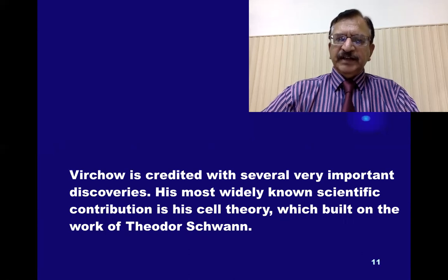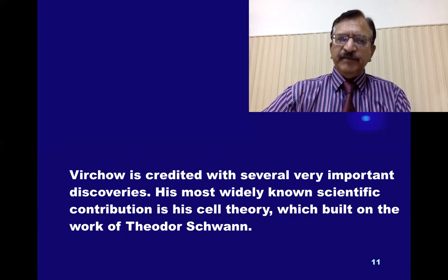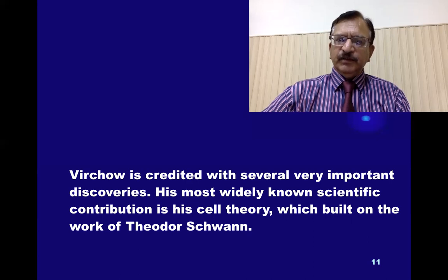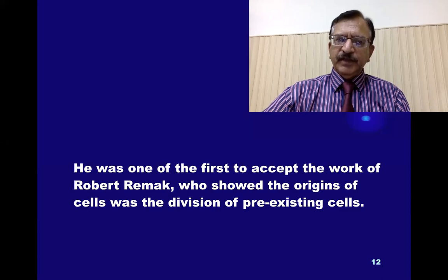Virchow was a scientist credited with several very important discoveries. His most widely known scientific contribution is his cell theory, which was built on the work of Theodore Schwann. He was one of the first to accept the work of Robert Remak, who showed the origins of cells was the division of pre-existing cells.